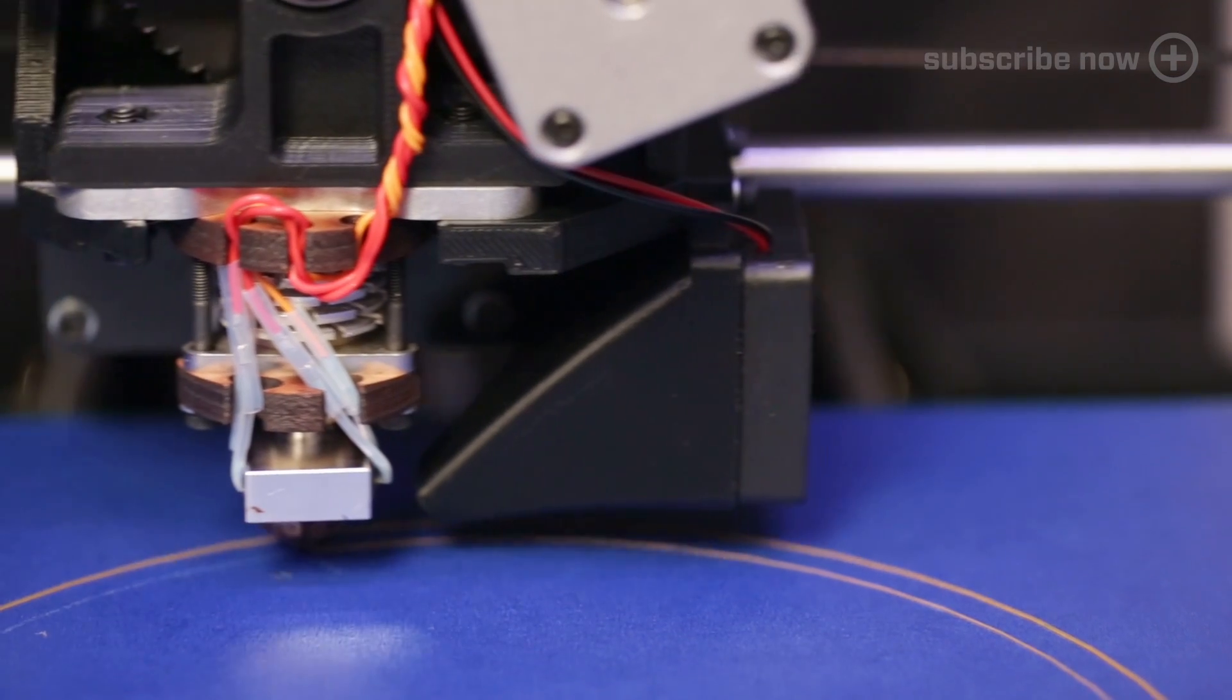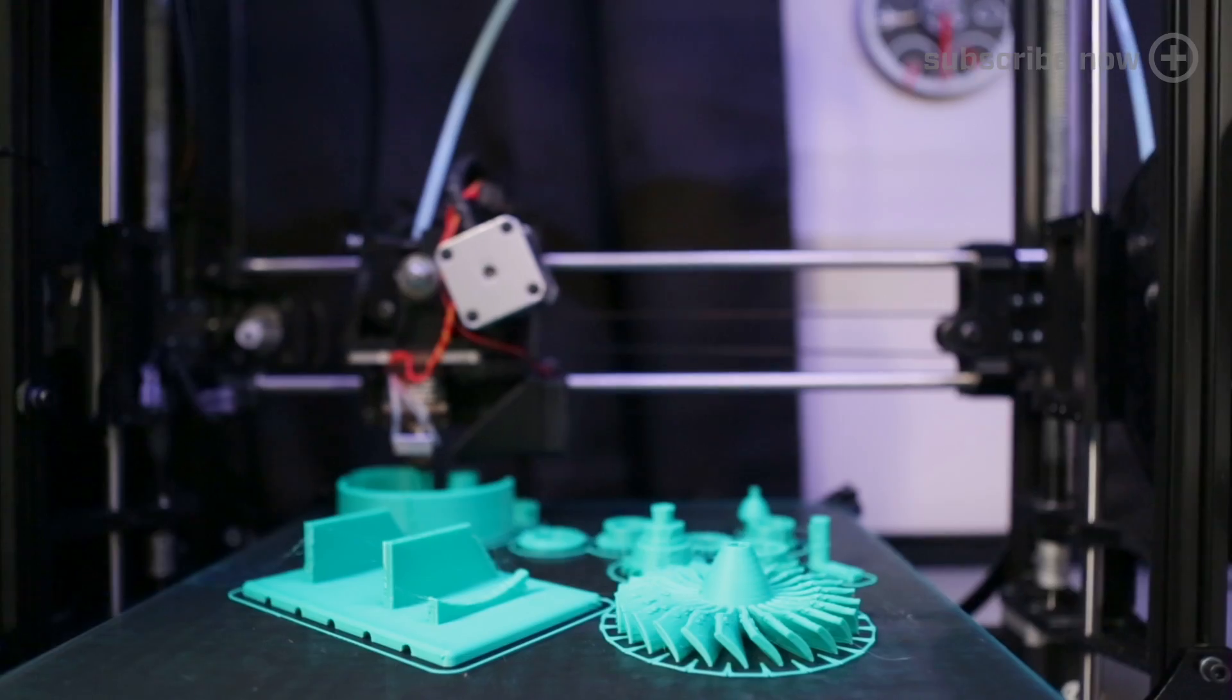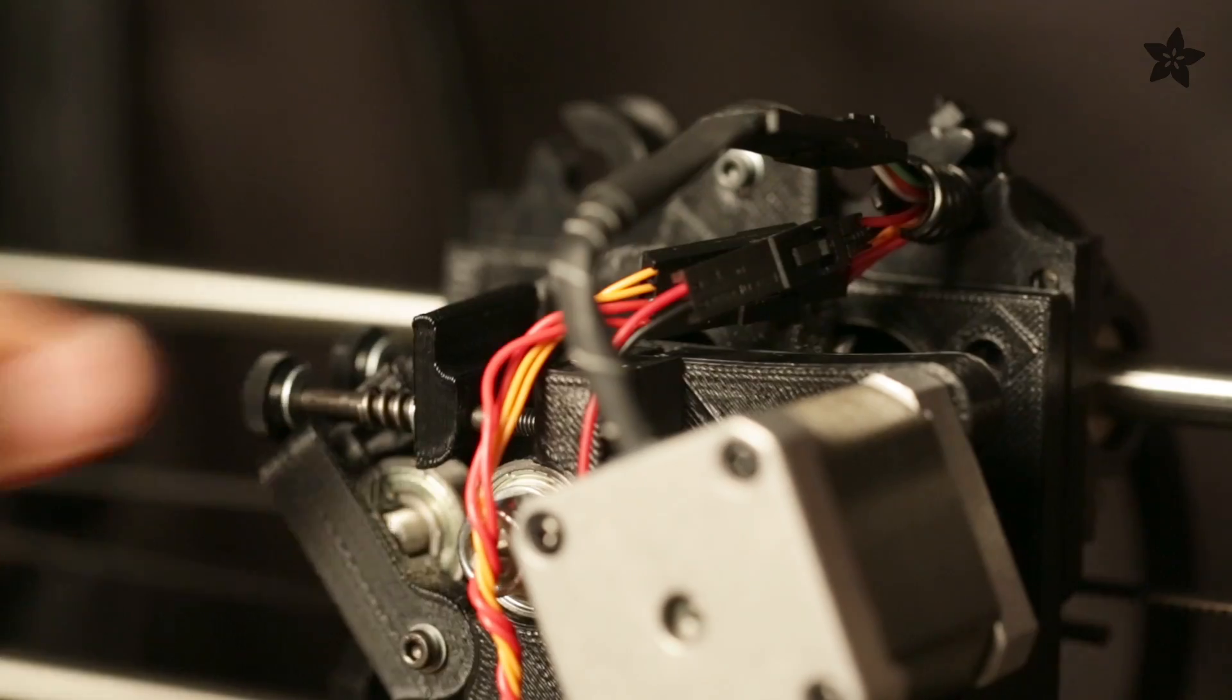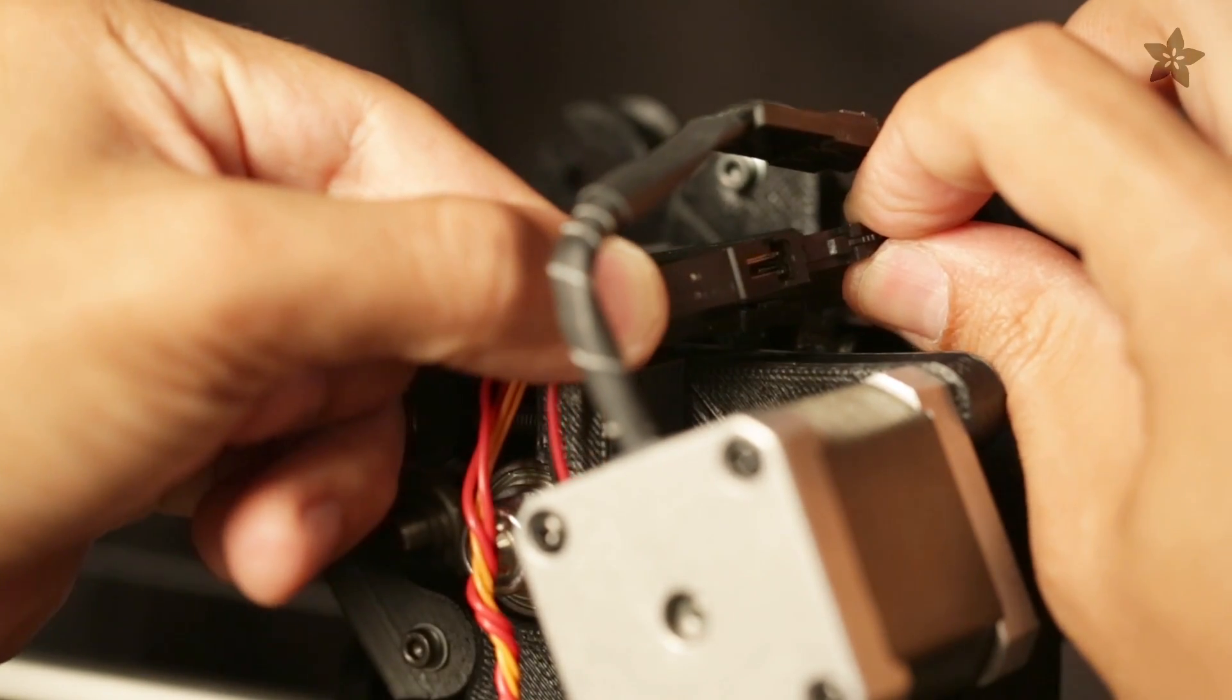It can print in many different types of filament like PLA, ABS, and NinjaFlex. This printer ships with support for 3mm filament but can be easily converted to print with the ever-popular 1.75mm.